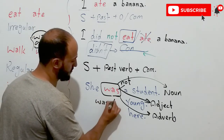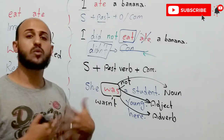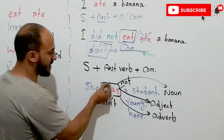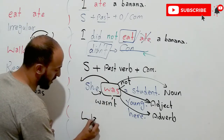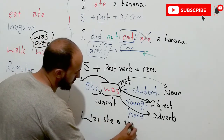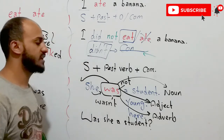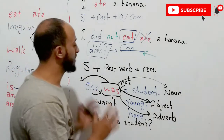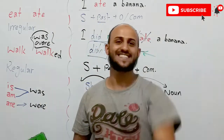For questions with 'was' and 'were,' you simply swap the verb and subject. For example: 'Was she a student?' Short answers: 'Yes, she was' or 'No, she wasn't.' That's all about simple past — thank you, I hope you enjoyed it, see you guys!